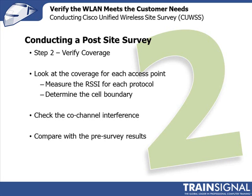In addition to looking at sources of interference, you also want to verify the coverage of the access point — comparing what you planned and expected against what is happening in reality. You should be checking for adequate signal level, measuring received signal strength, and looking for the edge of the cell boundary. At the same time, check the co-channel interference. Some people stand very close to the access point and listen for other access points operating on the same channel. My preferred approach is to move to the edge of the cell boundary and listen for co-channel interference there.